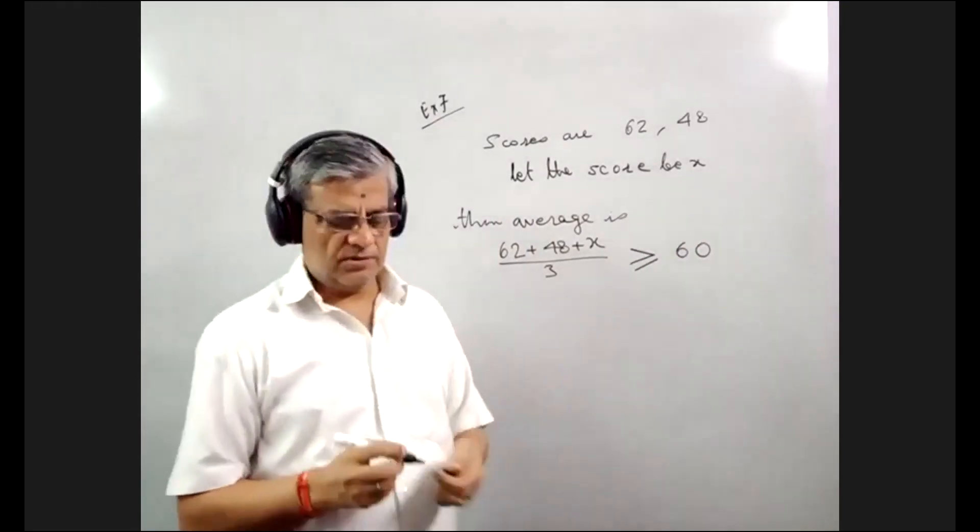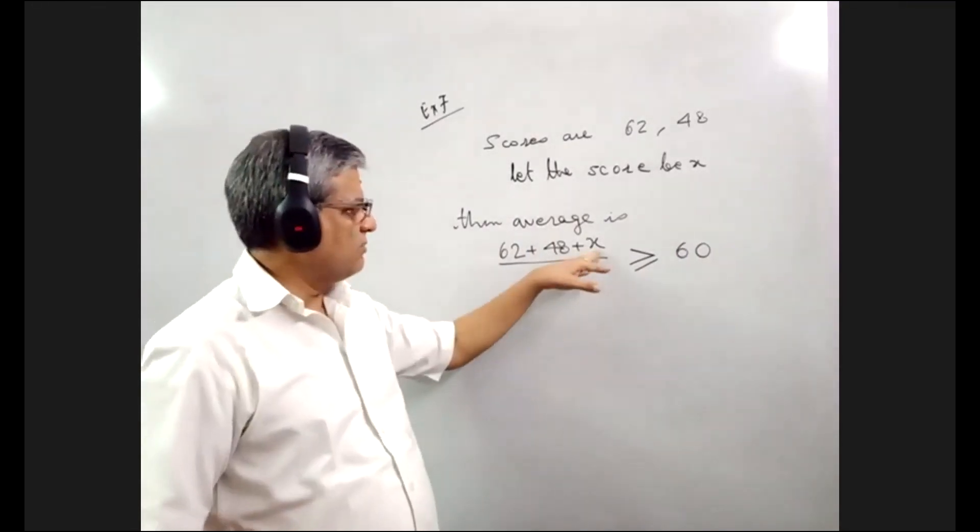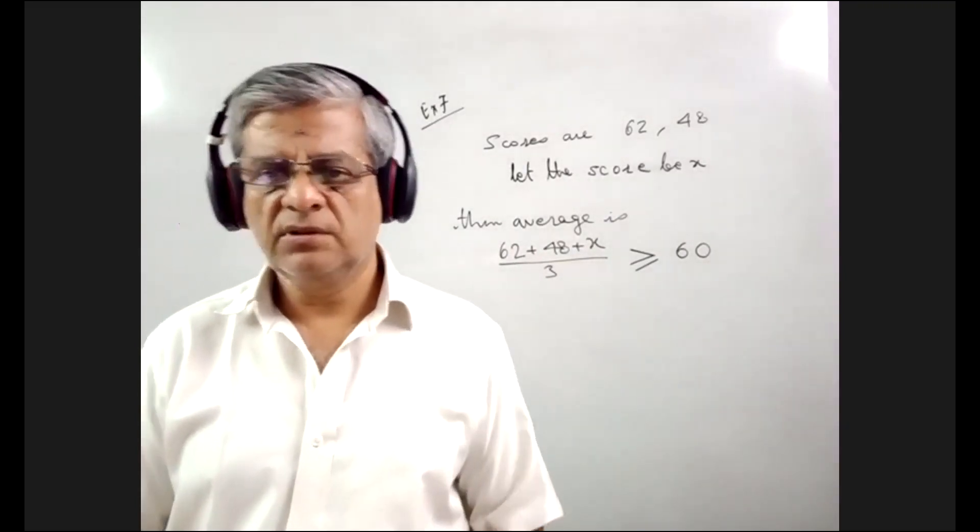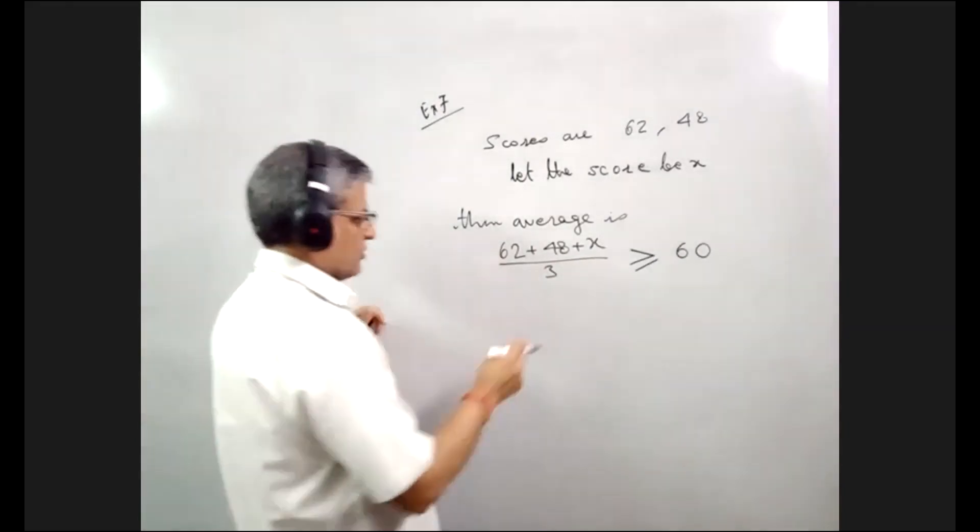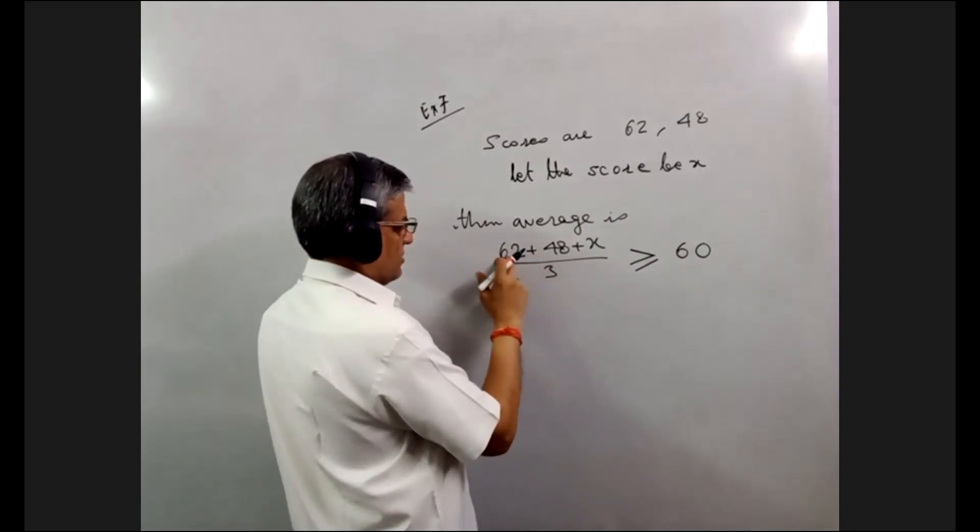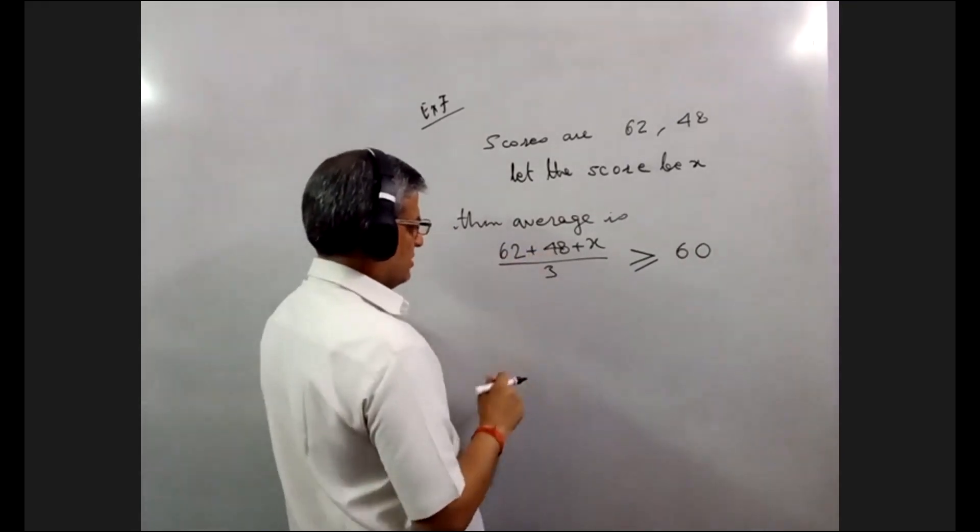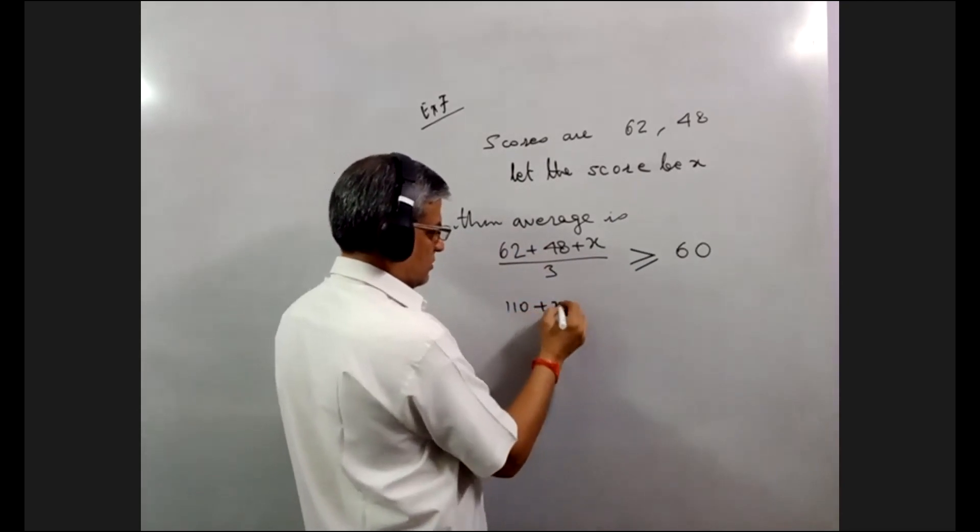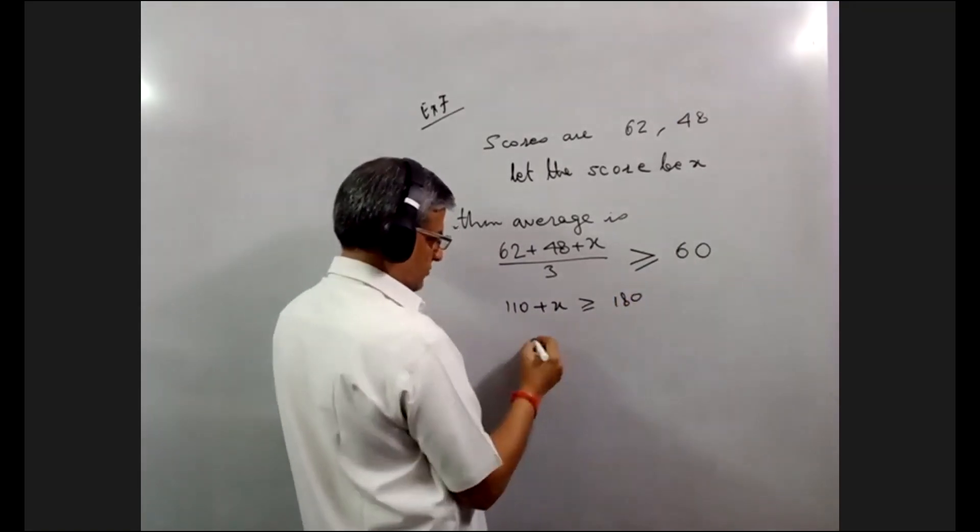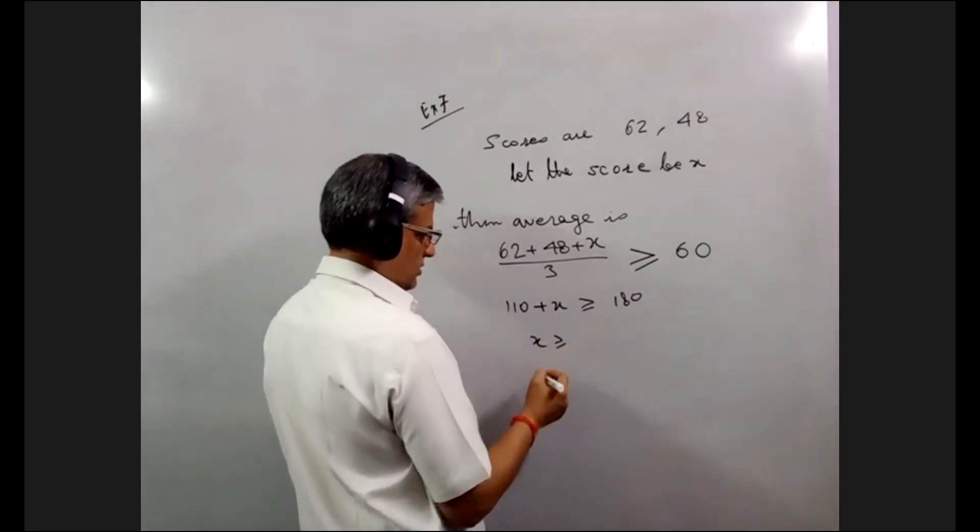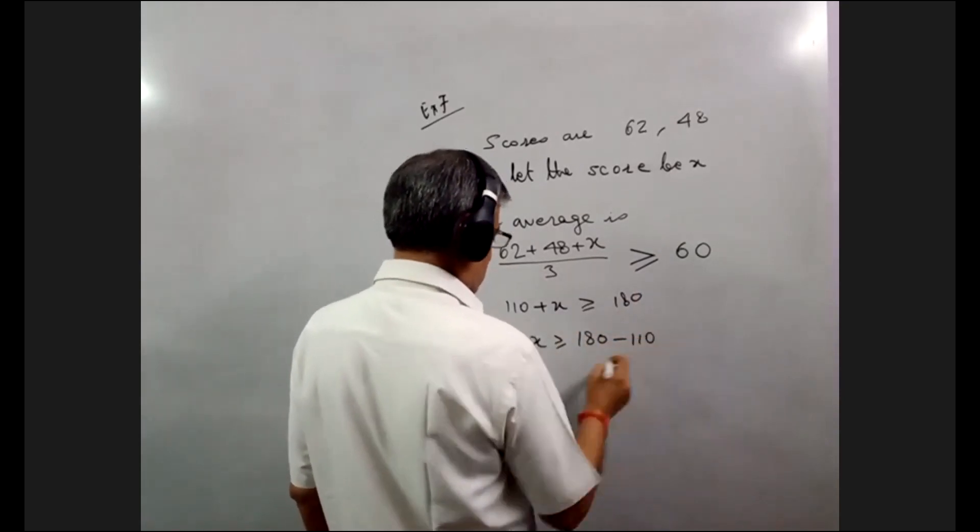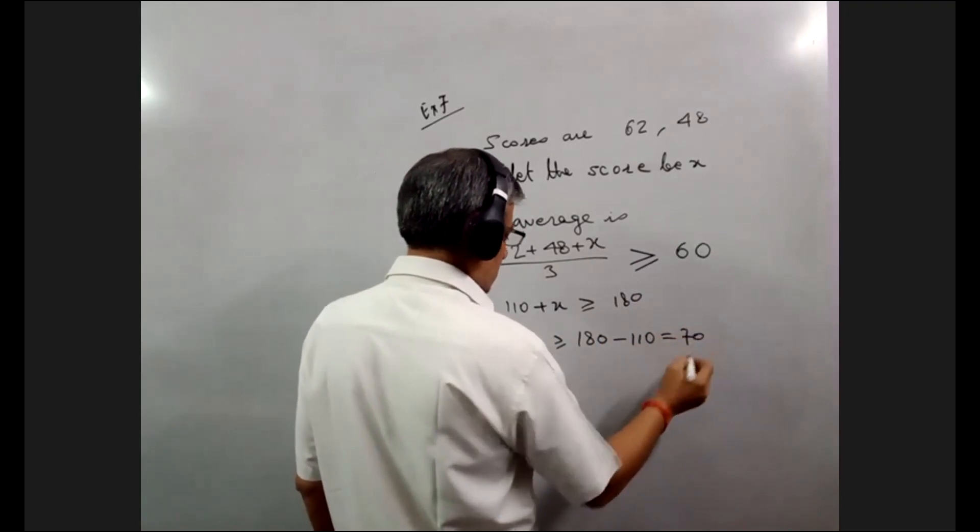You have to solve this equation to find the minimum value of x so that the aim is achieved. So, multiply by 3 here, simplify. This is 62 plus 48 is 110 plus x greater than equal to 180. So, x should be more than equal to 180 minus 110 that is 70.